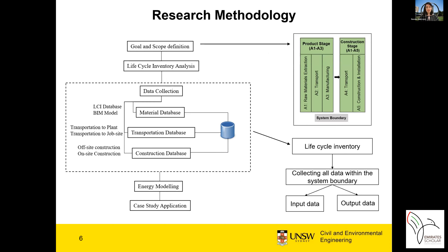I chose Autodesk Revit as the BIM platform, as it is a common tool for designing and visualizing both architectural and structural plans. For the energy analysis, we need all the information about the building's geometry, elements, and their properties such as densities. We use Dynamo to export all the relevant data and store it in an external database. Dynamo is an open-source visual programming language for Revit that enables users to sort building elements and their information in the desired sequence. By scripting in Dynamo, it can extract building data from Revit and store it to Excel.